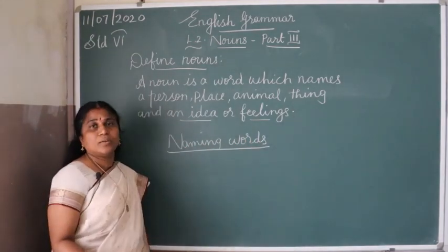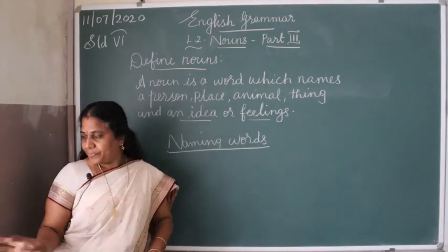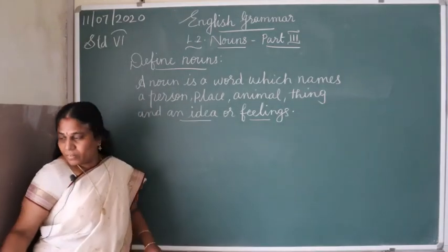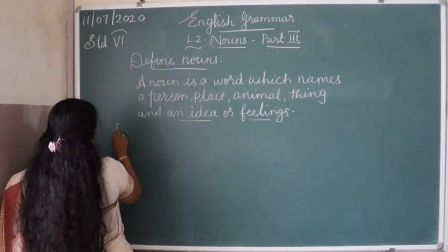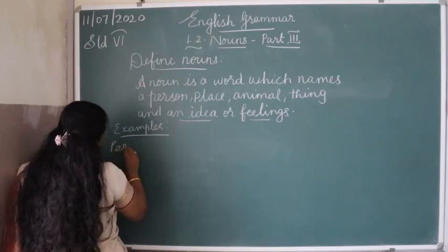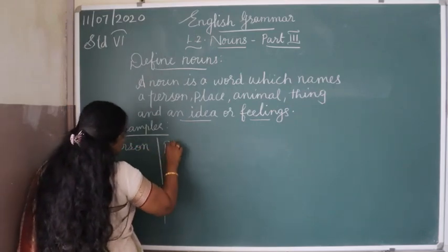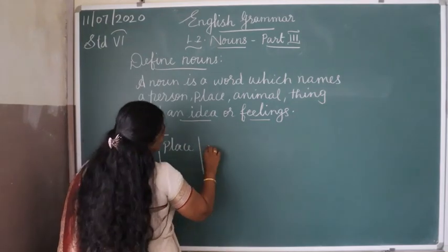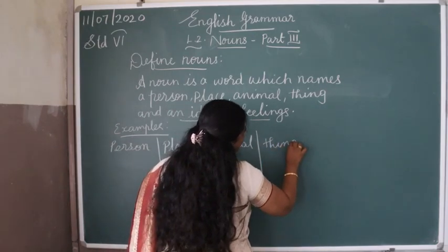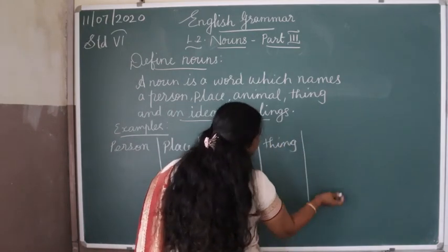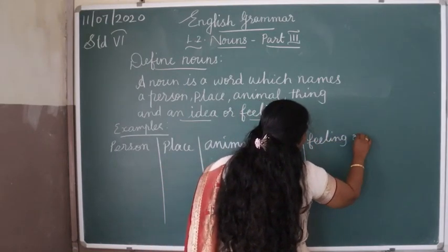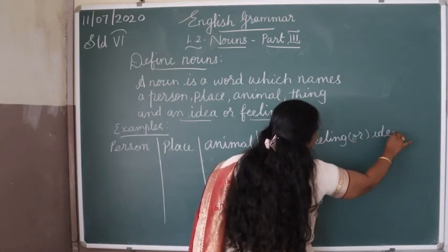Next, let's move on to the examples. The categories are: person, place, animal, thing, and feeling or idea.